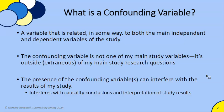Maybe participants are just really good test takers. They might not have participated in my intervention, but they know how to answer questions and narrow down choices to pick the right answer, even though they may not actually know the content. Or maybe they have poor vision and can't read the questions well — they really did learn what you taught them, but they can't see the paper to answer. That is influencing the results of your study, and that is essentially a quick example of what a confounding variable is.